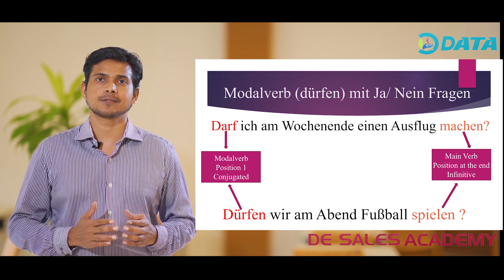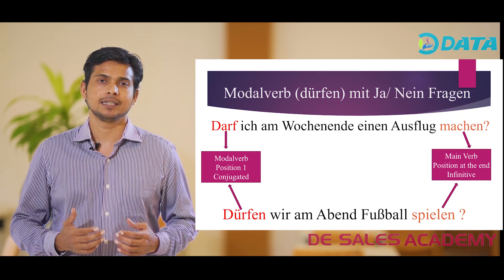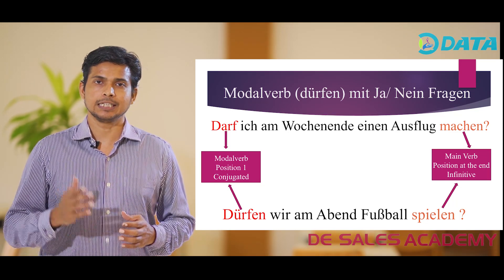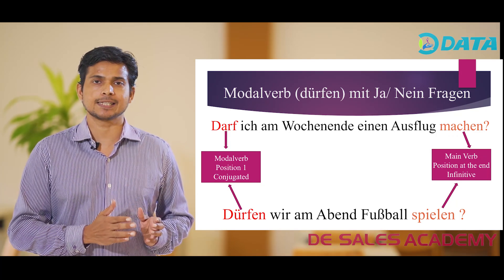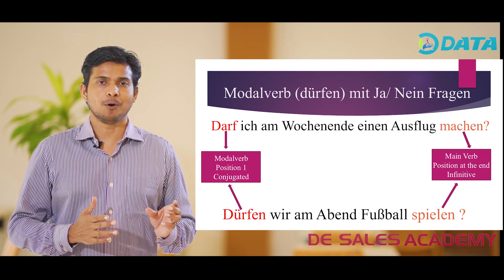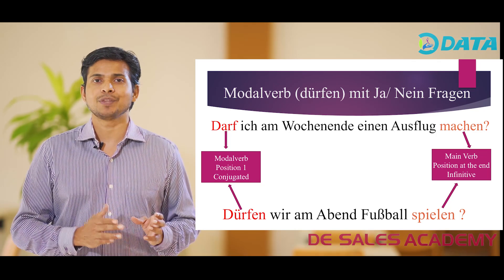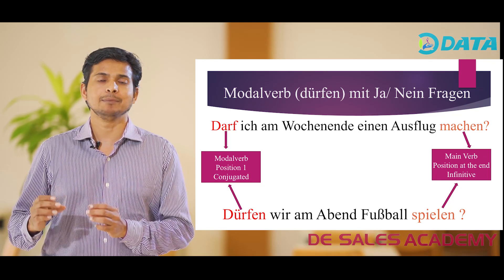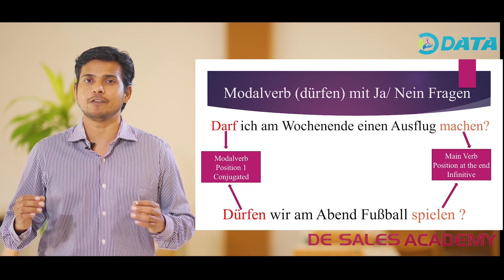Let us consider two examples. Darf ich am Wochenende einen Ausflug machen? Am I allowed to make a trip on the weekend? In this example, Dürfen is placed in the first position, conjugated according to the subject ich, and the main verb machen is placed at the end of the sentence in its infinitive form. It is not conjugated.